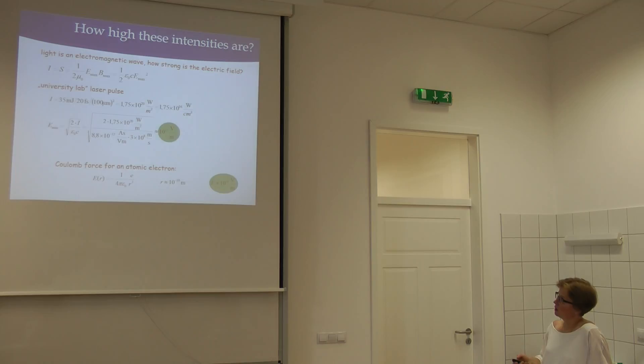And then it turns out that the electric field strength is 10 to the 11 volts per meter. This is quite a high number. If you calculate what's the Coulomb force on the electron provided by the central ion, typical numbers you put in for the distance between the electron and the atom gives you again 10 to the 11 volts per meter.